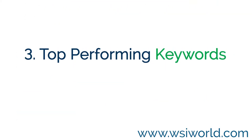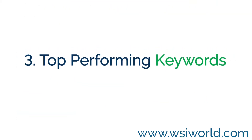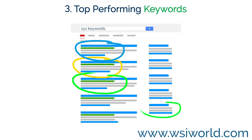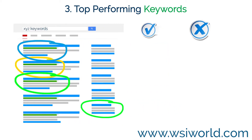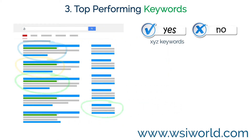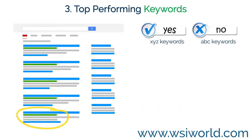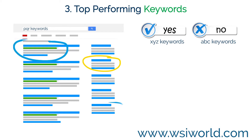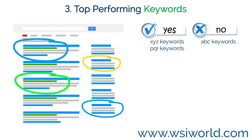3. Top Performing Keywords. Once you can identify what keywords your competitors are ranking well for in both organic search and paid ads, you can prepare a list of the top keywords you should be targeting and outperforming them on.